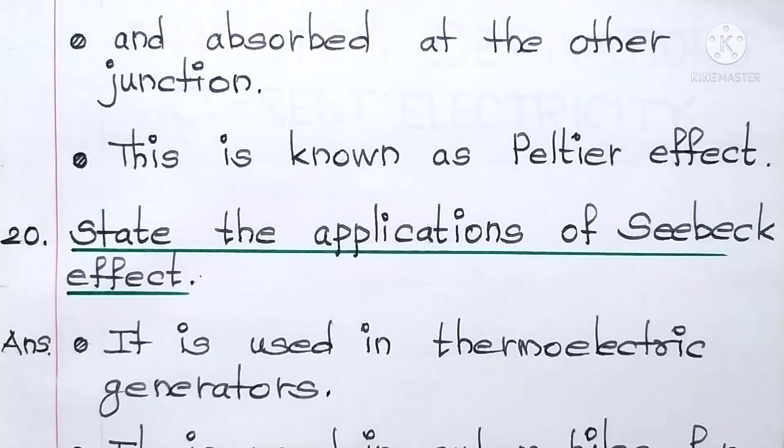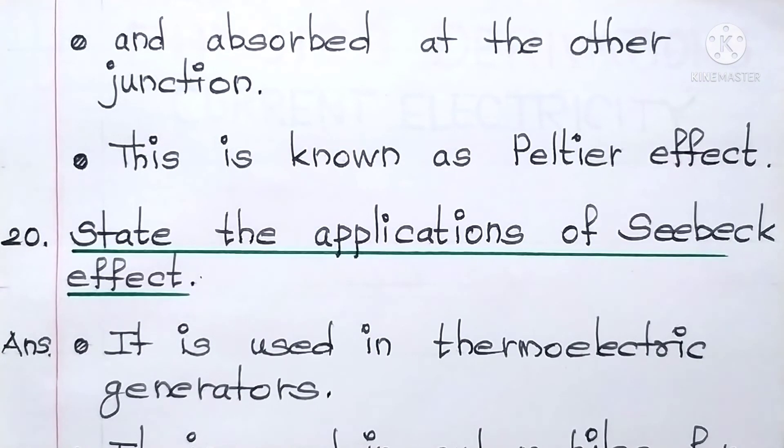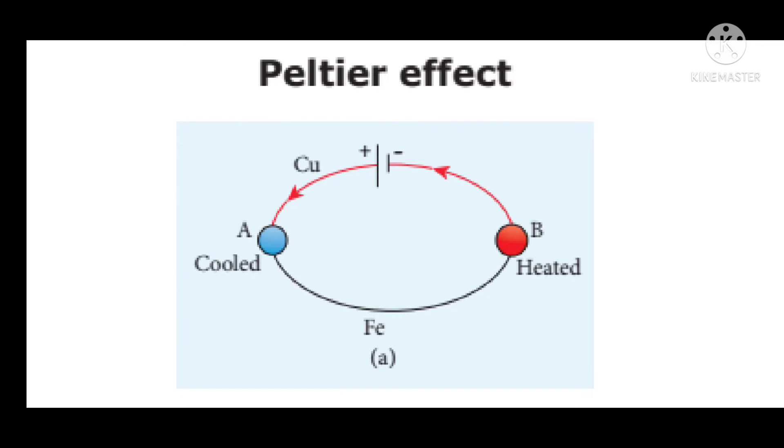Now, let us see this Peltier Effect in detail with the help of a diagram. Have a closer look at this diagram. In this diagram, here comes a thermocouple. What is meant by a thermocouple? If two different metallic conductors or wires are connected, then it forms a thermocouple. Here, a copper wire and an iron wire, both are connected and form a thermocouple.